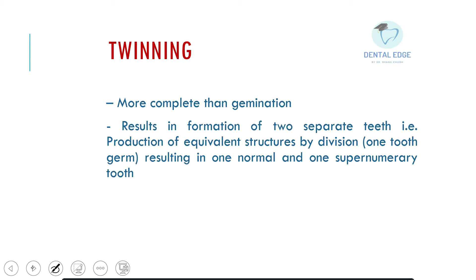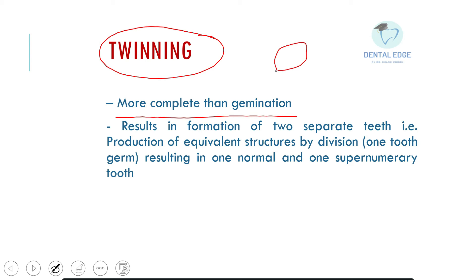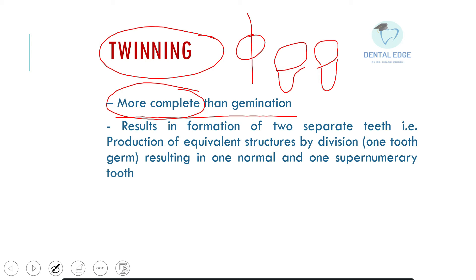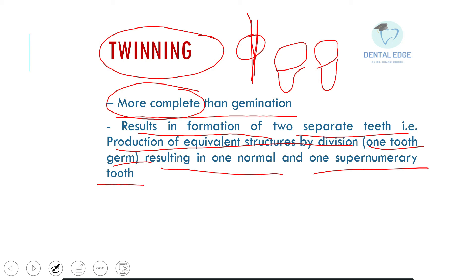One more term sometimes asked is twinning. Twinning is more complete than germination — when division results in two separate tooth structures being formed. A single tooth germ divides and leads to formation of two separate teeth. It results in production of equivalent structures by division — one normal and one supernumerary tooth.